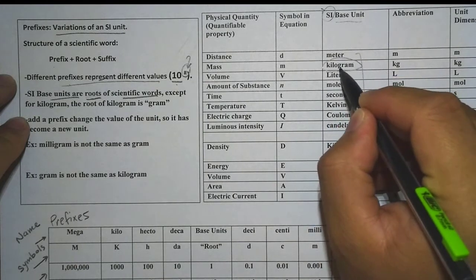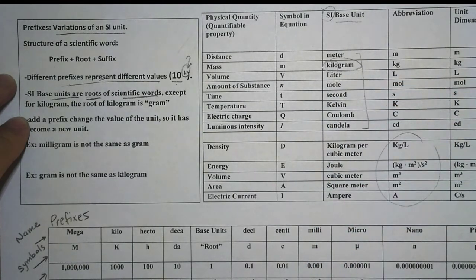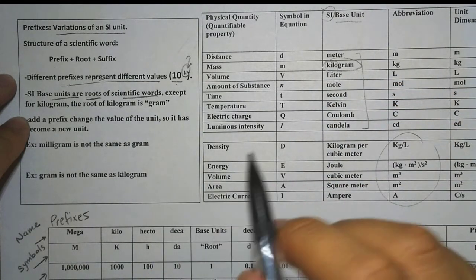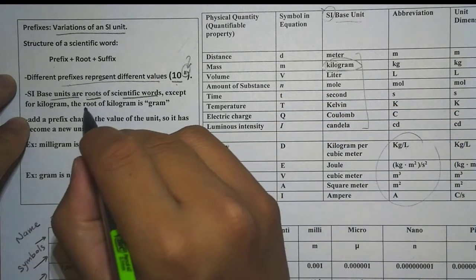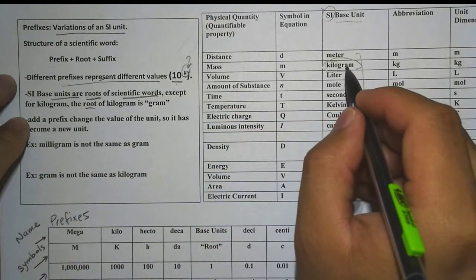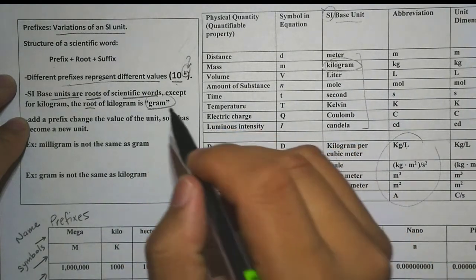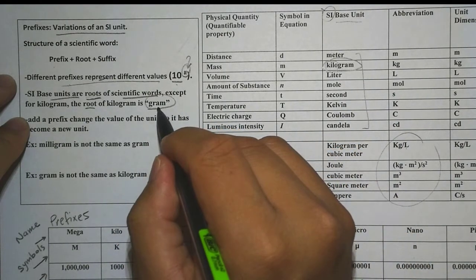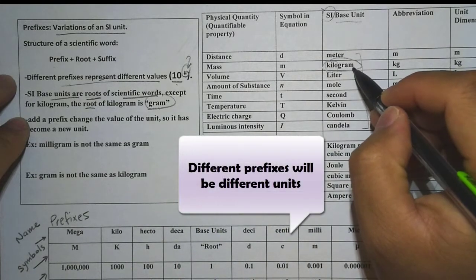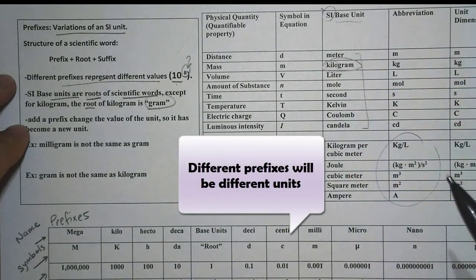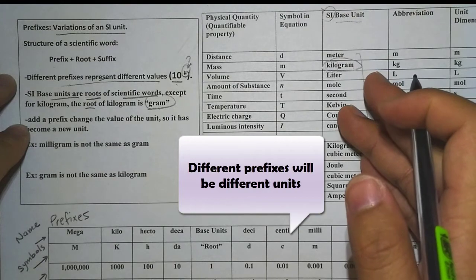Look at the word kilogram — it has a prefix already. So in kilogram, which is the base unit for mass, the root of that base unit is gram. Gram is the root in kilogram, so keep that in mind. Everything else in the SI system serves as the root of the word.